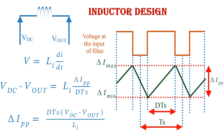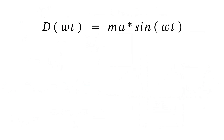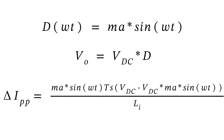Rearranging the equation, we get delta I_pp equals d·T_s multiplied by (V_dc minus V_out) divided by L_i. For any sinusoidal PWM inverter, duty cycle d at any time is given by d(ωt) = M_a·sin(ωt), where M_a is the modulation index. Output voltage V_o equals duty ratio times input voltage. Substituting these into the previous equation gives the expanded expression for delta I_pp.